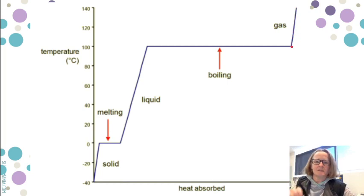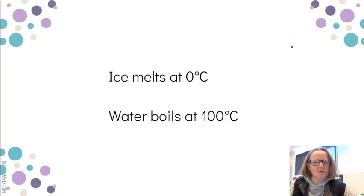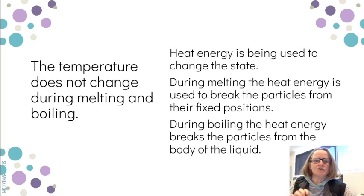So you'll notice ice is melting at 0 degrees C, water is boiling at 100 degrees C and the temperature does not change during melting and boiling. So that's because, as I said, the heat energy is being used to change the state. So solid is a state, liquid is a state and gas is a state. So during melting, the heat energy is being used to break the particles from their fixed position. And during boiling, the heat energy is breaking the particles from the body of the liquid.